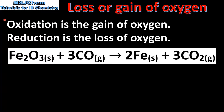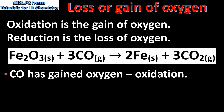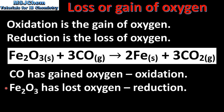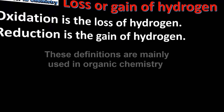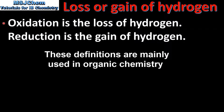Next we look at the loss or gain of oxygen. Oxidation is the gain of oxygen and reduction is the loss of oxygen. In this reaction we have iron oxide reacting with carbon monoxide to form iron and carbon dioxide. The carbon monoxide has gained oxygen, which is oxidation. The iron oxide has lost oxygen, which is reduction.